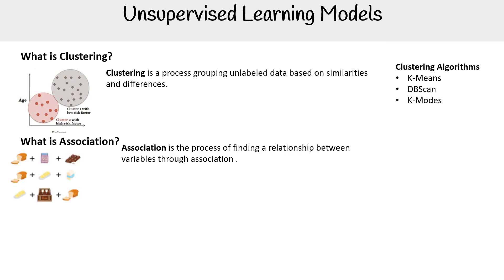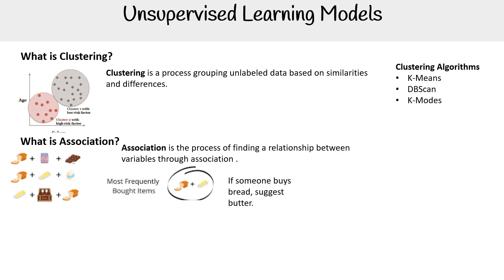Then we have association. Association is the process of finding relationships between variables. The idea is that if somebody buys bread, then suggest butter — because based on previous combinations, we know what people want. There are different algorithms for that; you can see them on the right-hand side.